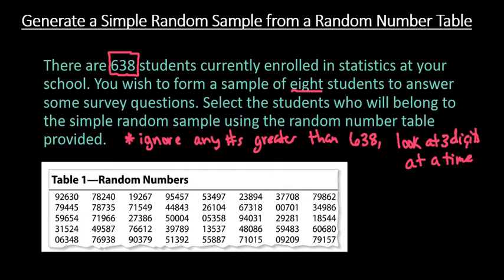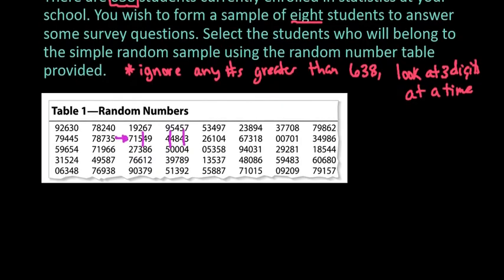And when you're doing this you can start anywhere on your table. I decided to start at row two column three so I'm going to start right here. That way you can see what happens if we have values that are larger. So I'm basically just going to break it off into three numbers. So 715 would be my first one that I would look at and then I would look at the next three numbers and the next three numbers and I would continue on in this pattern until I have a total of eight.